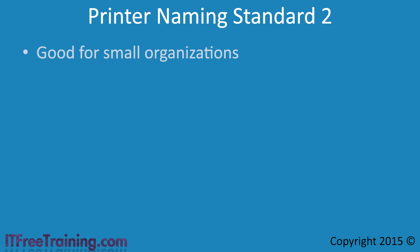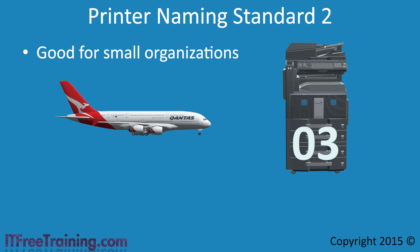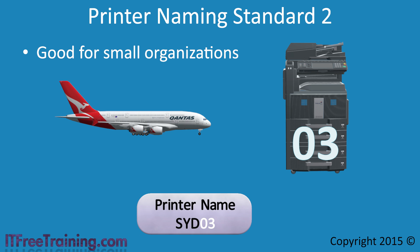The second standard is a simpler version, more suited for smaller organizations. This could be used when you have a small number of printers spread over a large area. In this example, you find the closest airport and use its international airport code combined with the printer number — in this case giving you SYD03. You could also use country codes depending on your needs. If you consider that most organizations now use a small number of photocopiers rather than a large number of printers, your company may have surprisingly few printers compared to 10 or 20 years ago.